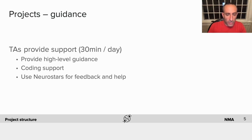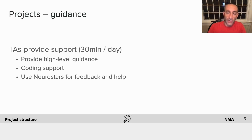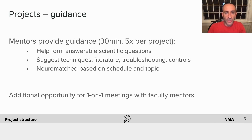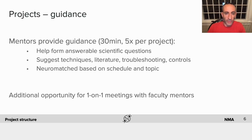The students — that's you — are going to be running the show here. You will have support from a TA; each project will have about 30 minutes a day on average of TA support. They'll be able to provide you with some high-level guidance and some coding suggestions, and you also always have the use of Neurostars, that forum for feedback, help, and comments. You'll also have expert guidance from mentors — many faculty mentors who are excited about helping you with these projects.